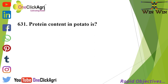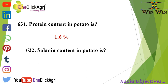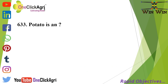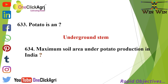Protein content in potato is 1.6%. Solanin content in potato is 5 mg per 100 gram of potato. Potato is an underground stem. The maximum soil area under potato production in India is alluvial soil.